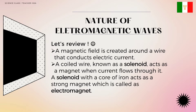So, how can you describe electromagnetism? Always remember that magnetic field is created around a wire that conducts electric current. A coiled wire, known as a solenoid, acts as a magnet when current flows through it. A solenoid with a core of iron acts as a strong magnet which is called an electromagnet.